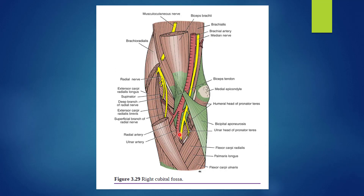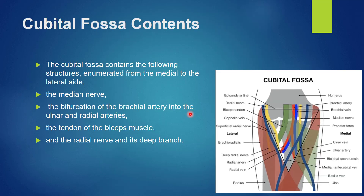In this diagram you can see the bicipital aponeurosis forming the roof of the cubital fossa. This is the medial epicondyle giving origin to the pronator teres, and here is the brachioradialis muscle — it has been cut to show the supinator muscle present laterally in the floor. The brachialis is present medially in the floor.